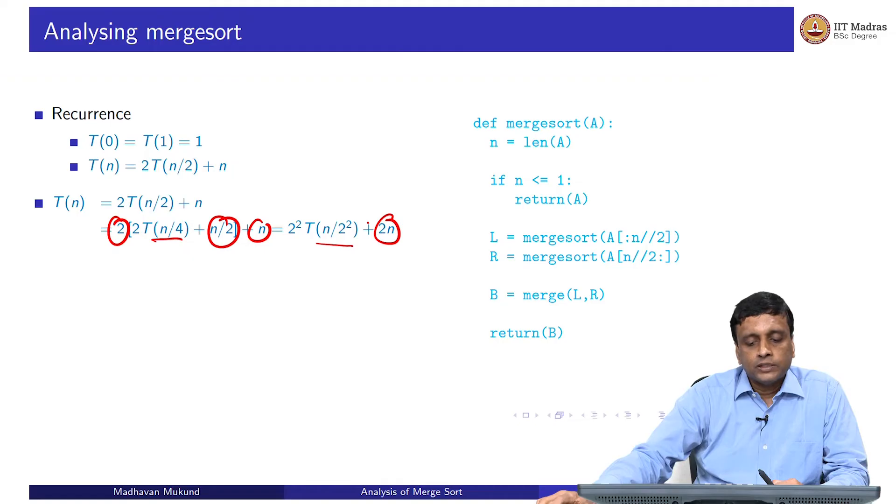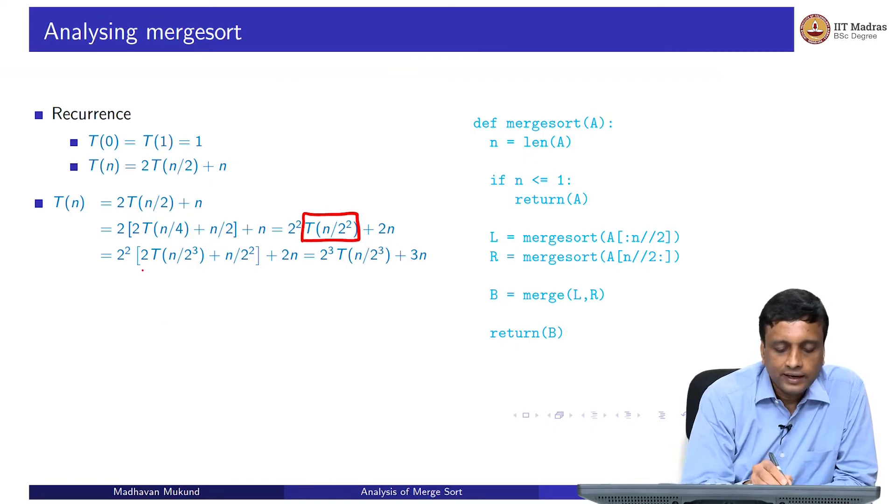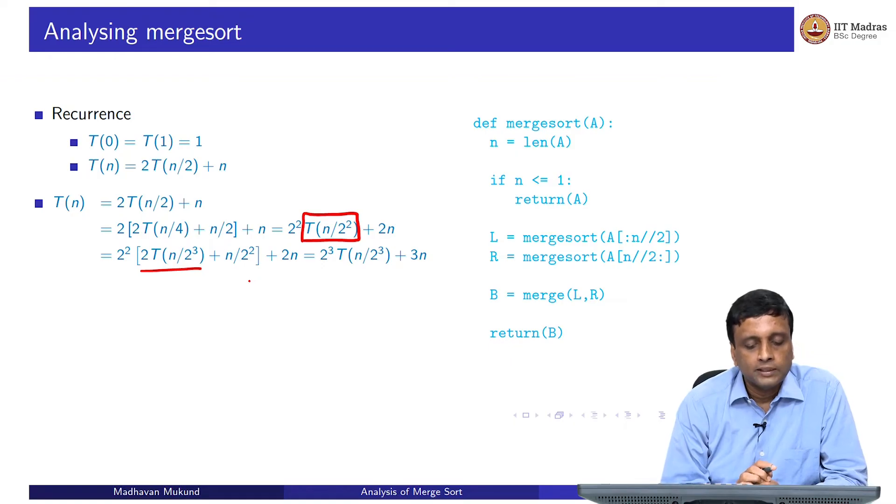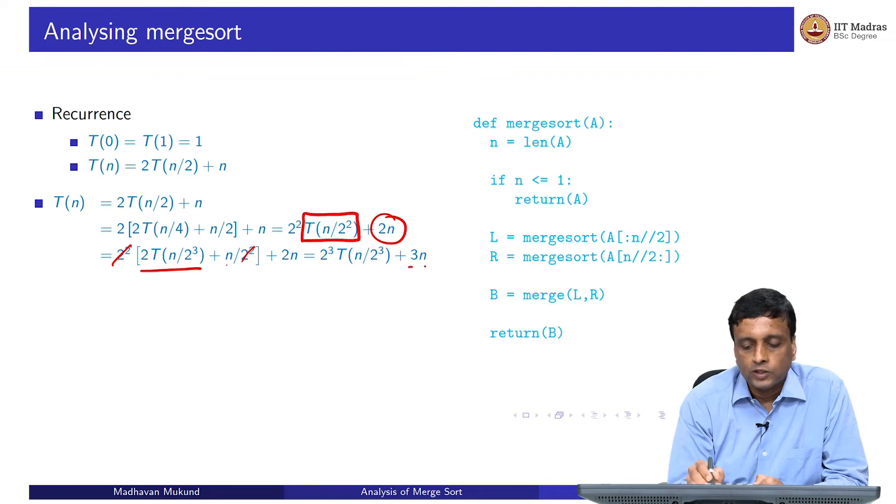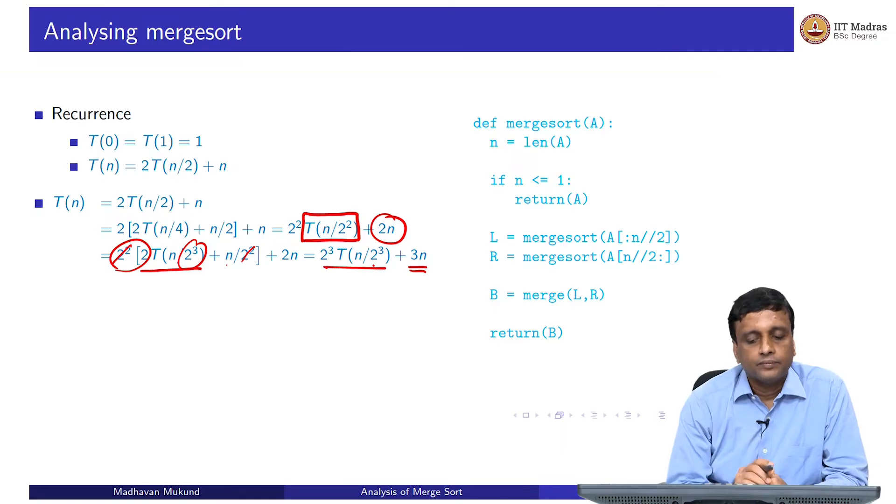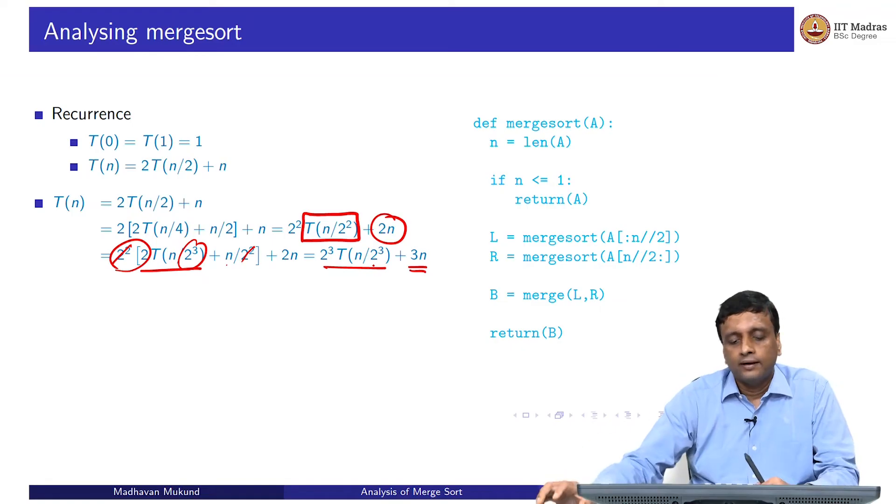Now let us do it one more time just to see what happens. I take this and I expand it and I get 2 times T(n/2 cubed) plus n/2 squared. And then I have this 2n. Again, I do this calculation - this 2 squared, 2 squared cancel, I get one more n. So I get 3n. And then this 2 cubed comes here. You can now see a pattern: after 2 expansions, I get 2 squared T(n/2 squared) plus 2n. After 3 expansions, I get 2 cubed T(n/2 cubed) plus 3n. So you can work out that after k steps, I will get 2 to the power k T(n/2 to the power k). This is just saying that I am dividing that interval by 2 k times and k times n.